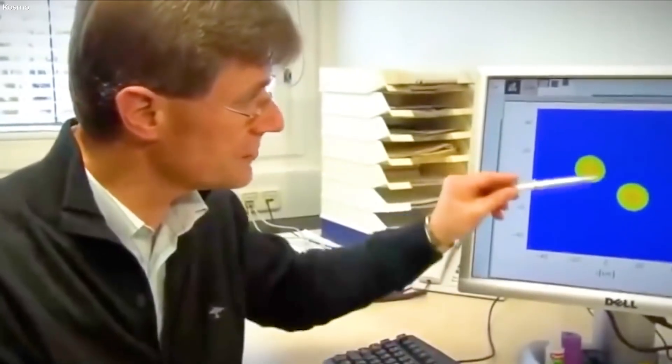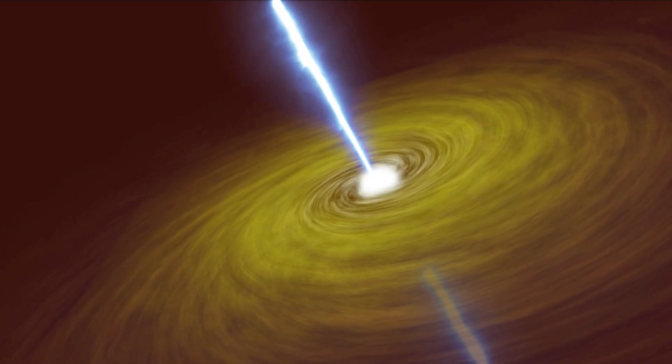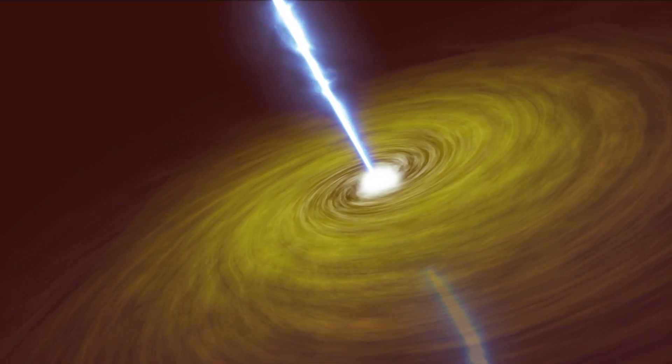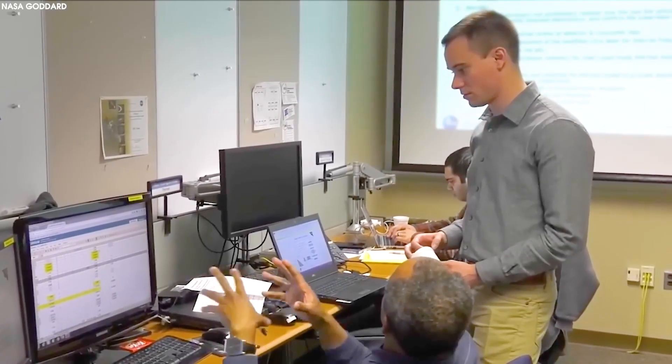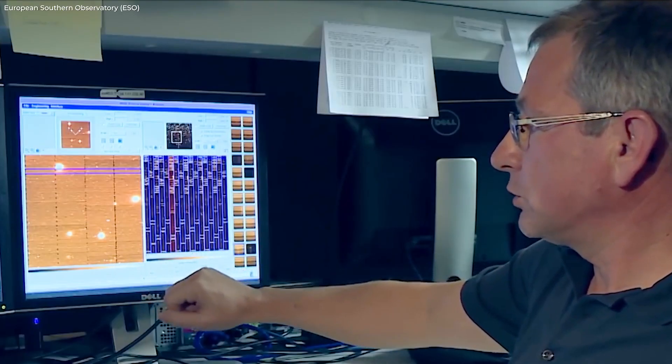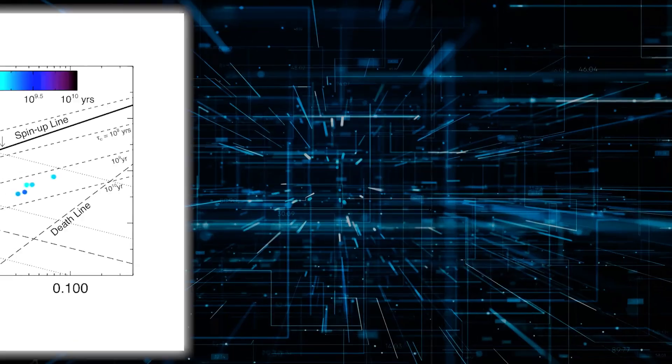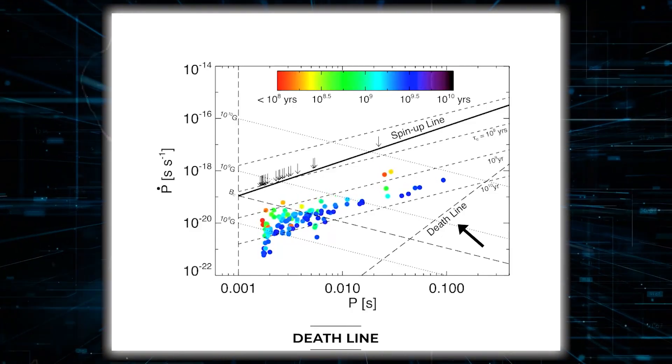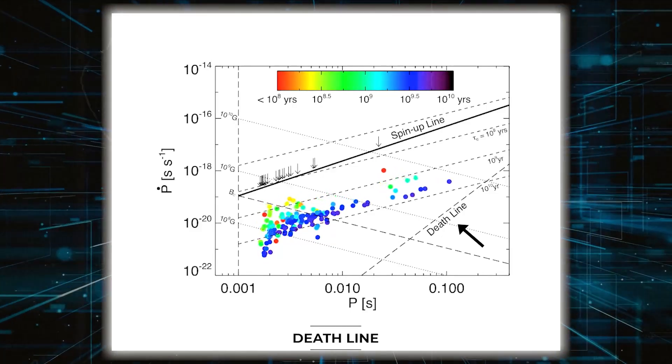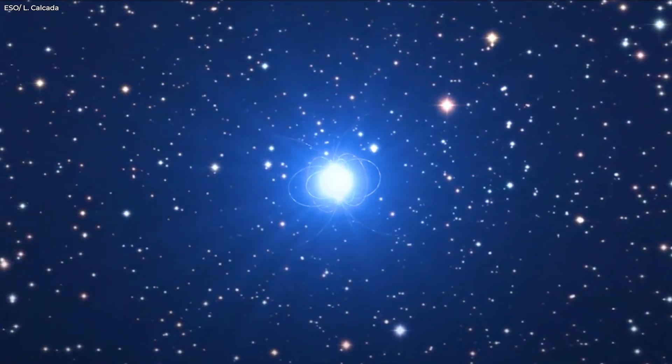Even more puzzling is the fact that the object the researchers discovered rotates one thousand times slower than a pulsar. In fact, researchers observed that it shouldn't be possible for it to create radio waves at all. The object is rotating so slowly that it is below what is known as the death line, which is the point at which a star's magnetic field is no longer strong enough to generate radio emissions.